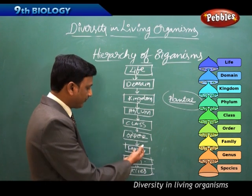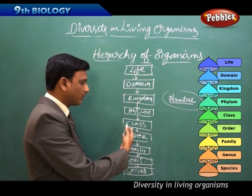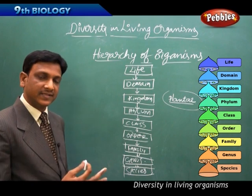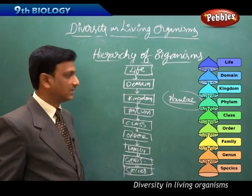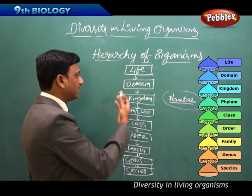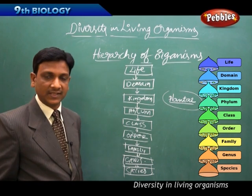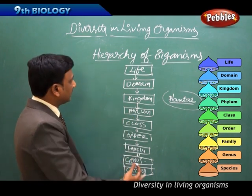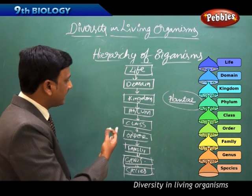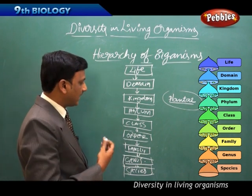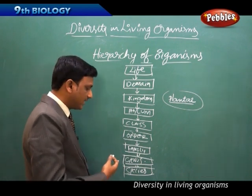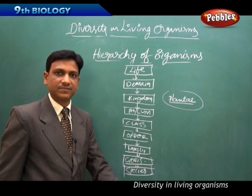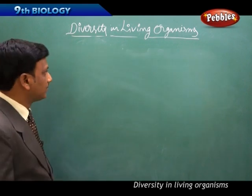If you go higher — to family, order, class — the similarities decrease and differences increase. So if you go to a higher category, differences are more and similarities are less. This is the hierarchy: life, domain, kingdom, phylum, class, order, family, genus, and species.